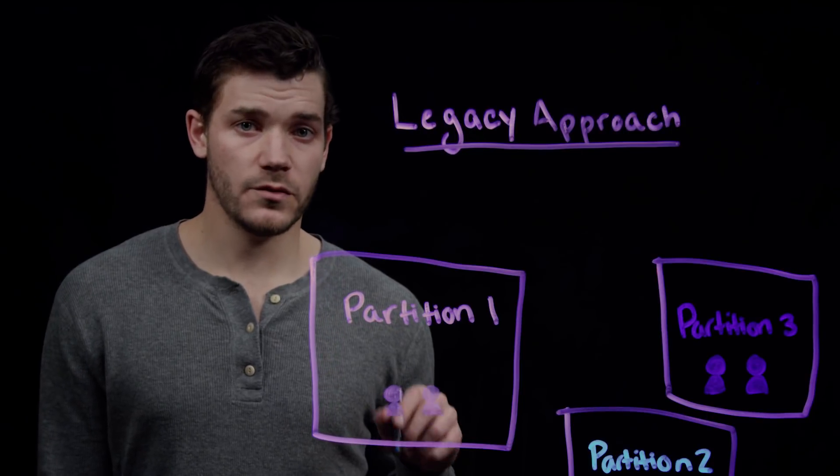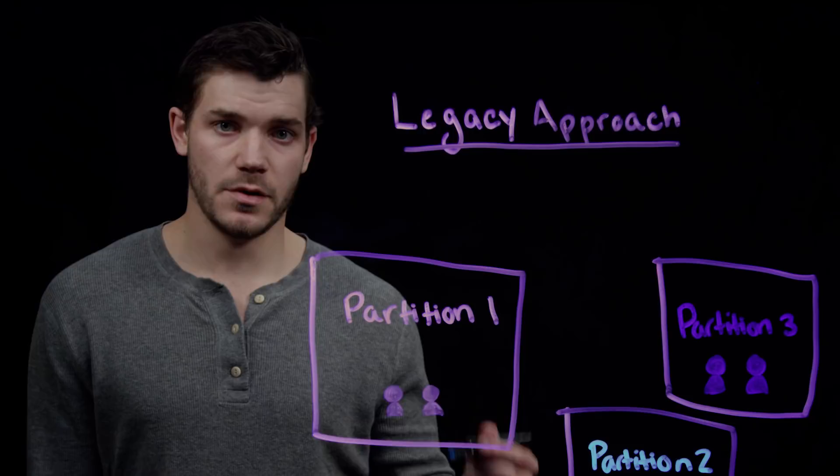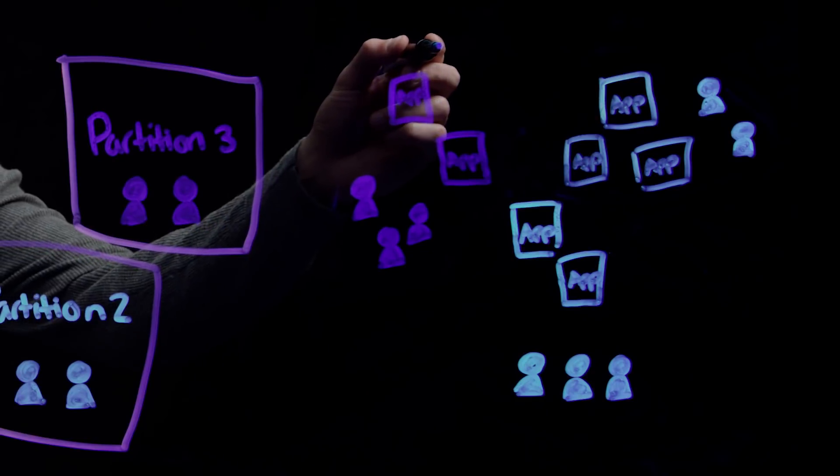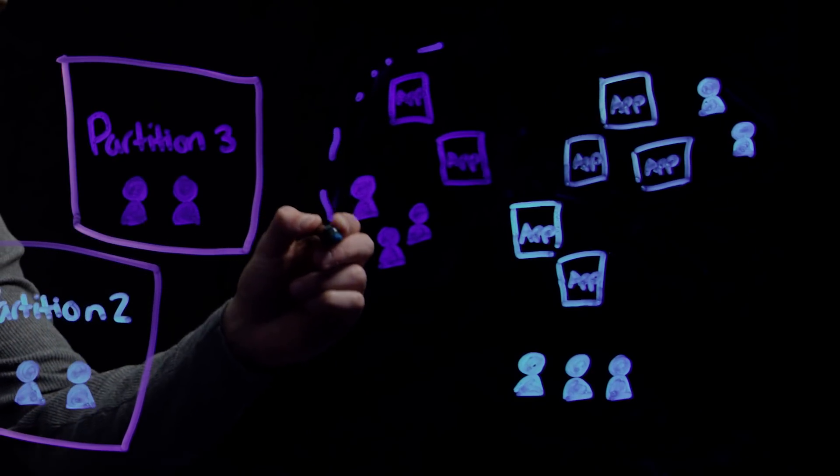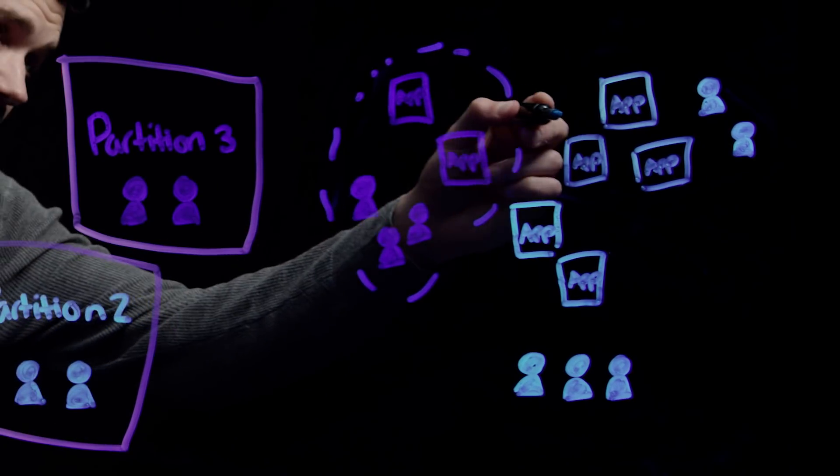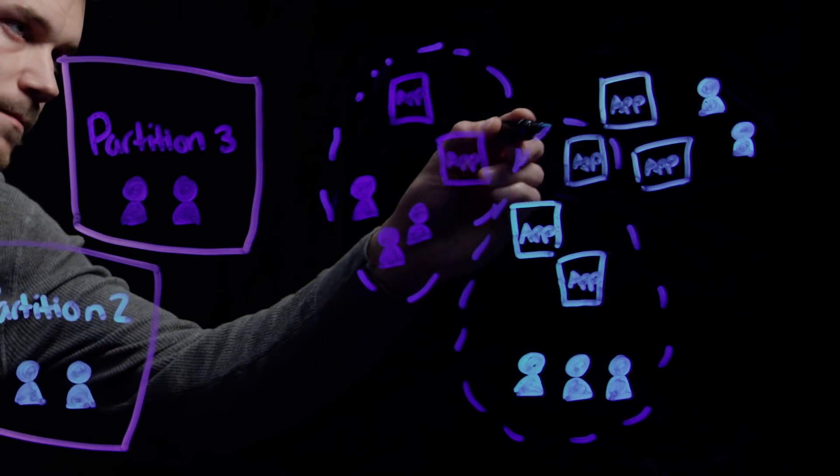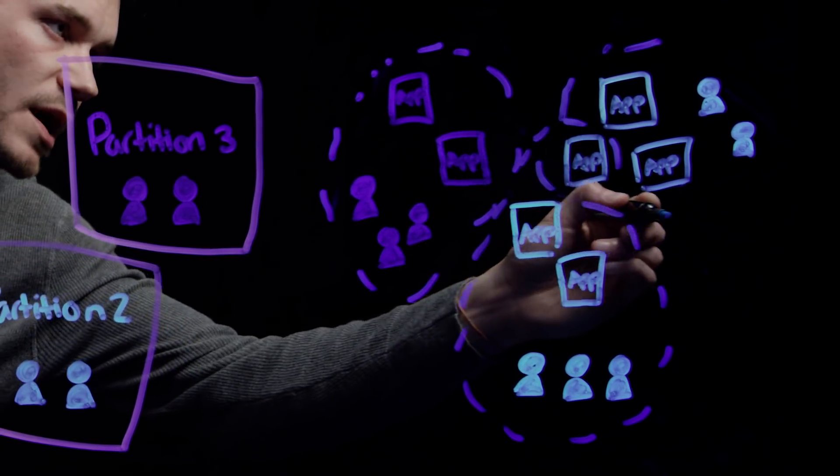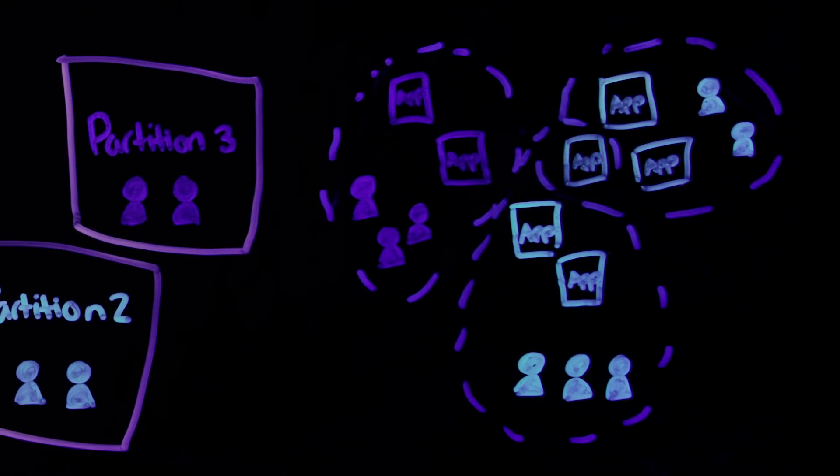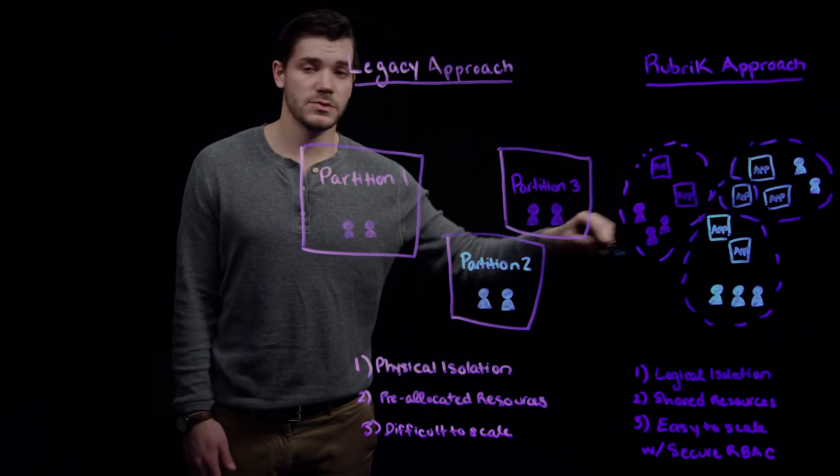What is innovative about Rubrik's approach to multi-tenancy is that we have taken a logical approach. This means we logically isolate the various resources within your environment rather than physical separation. As we can see here, we have logically grouped these different resources within your organization, which enables shared resources.